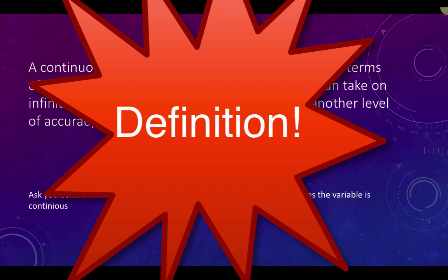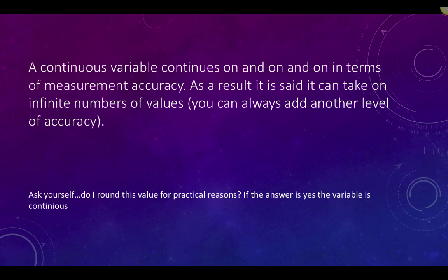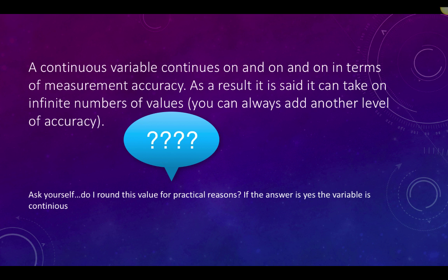A continuous variable continues on and on and on in terms of measurement accuracy. As a result, we say it can take on an infinite number of values. You can continue to add levels of measurement, down to minutes, seconds, tenths, hundredths, and so on levels of measurement. Ask yourself, did I have to round this value for practical reasons? If the answer is yes, then the variable is continuous.